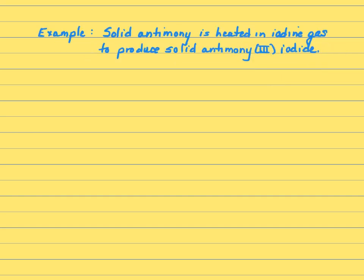Let's try another one. Solid antimony is heated in iodine gas to produce solid antimony three iodide. You can try this on your own if you want to. So just pause the video and give it a shot or we'll do it together. So antimony is Sb and it says a solid. We're going to heat it in iodine gas. So that's one of our Hofbrinkles, so it's I2.